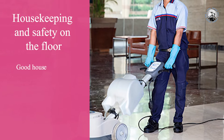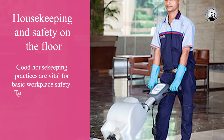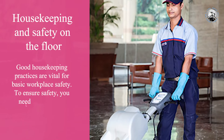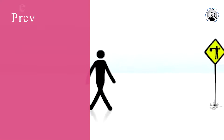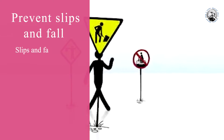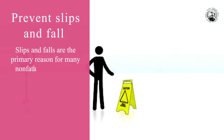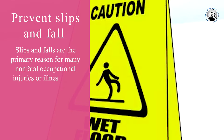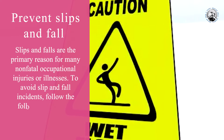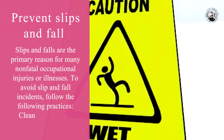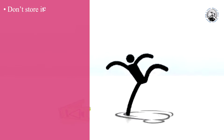Housekeeping and Safety on the Floor. Good housekeeping practices are vital for basic workplace safety. To ensure safety you need to follow the following housekeeping practices. Prevent slips and falls — slips and falls are the primary reason for many non-fatal occupational injuries or illness. To avoid slips and fall incidents, follow the following practices: clean up spills and leakages.